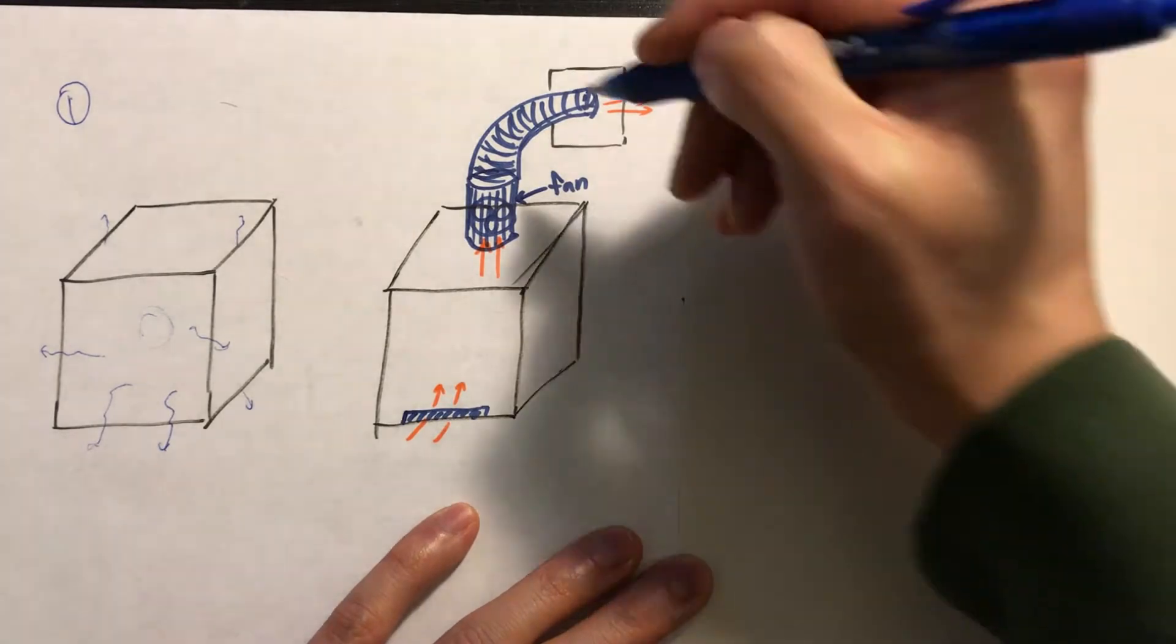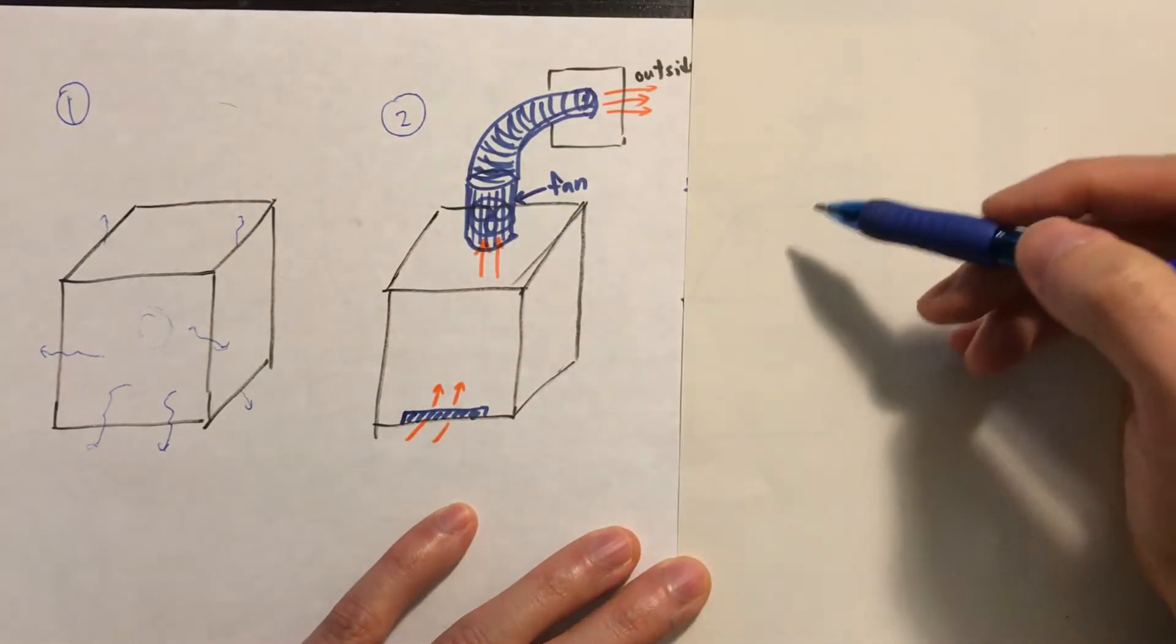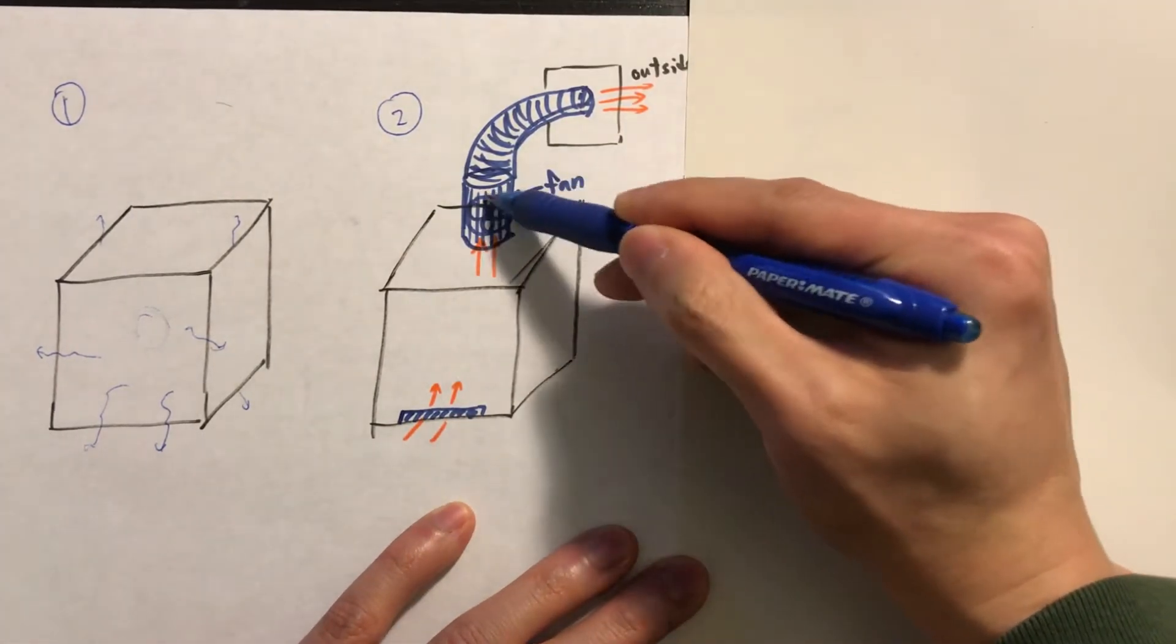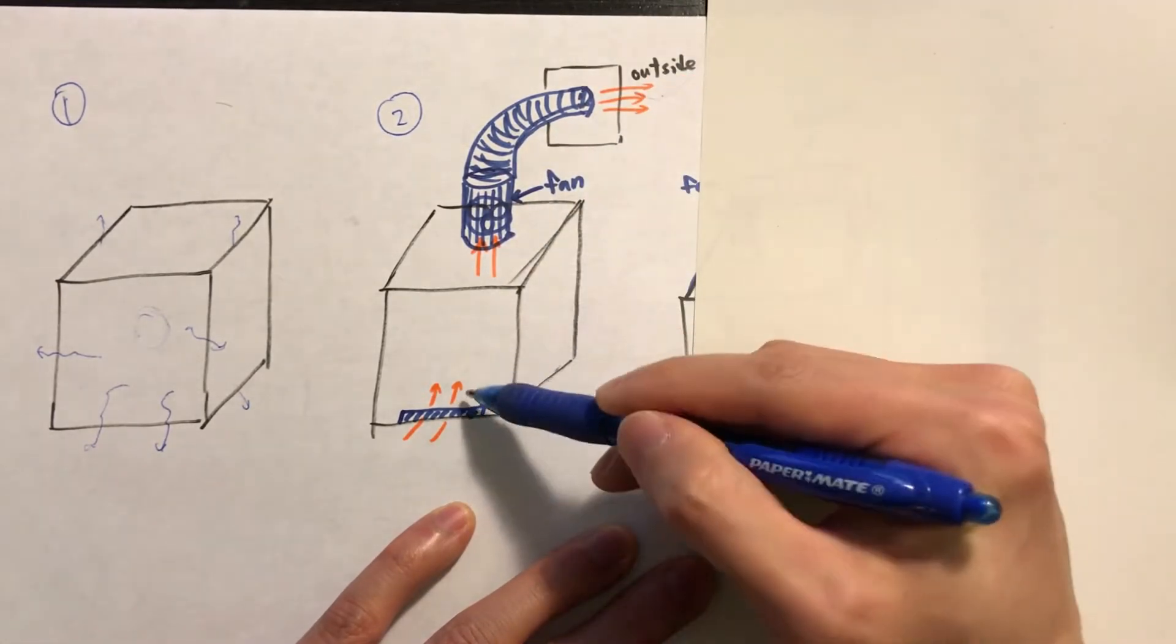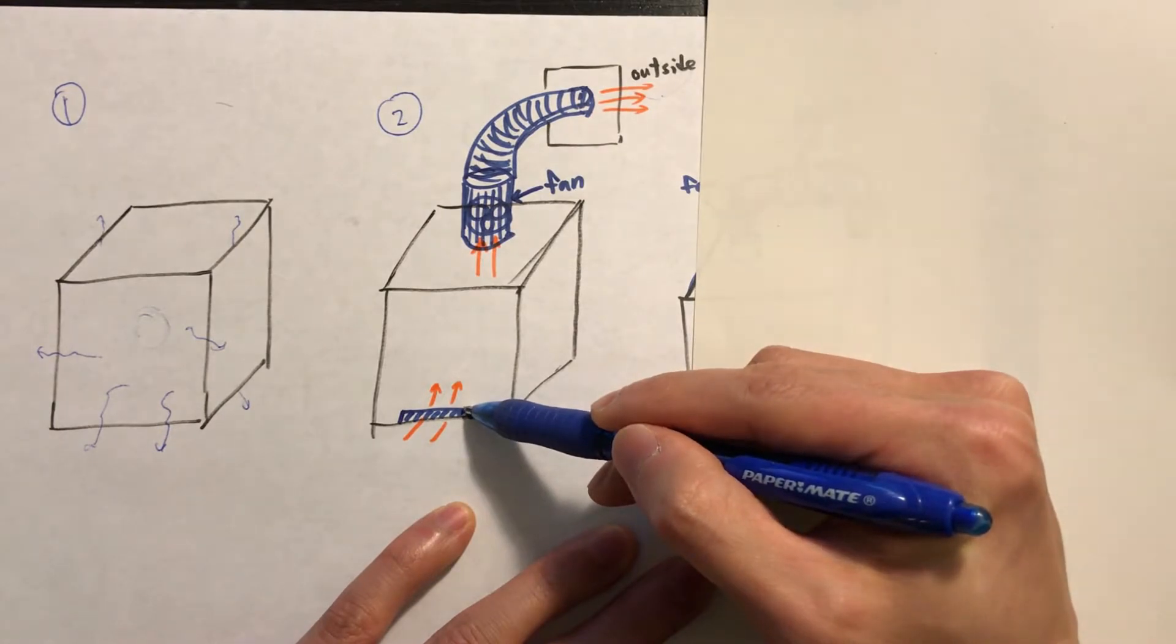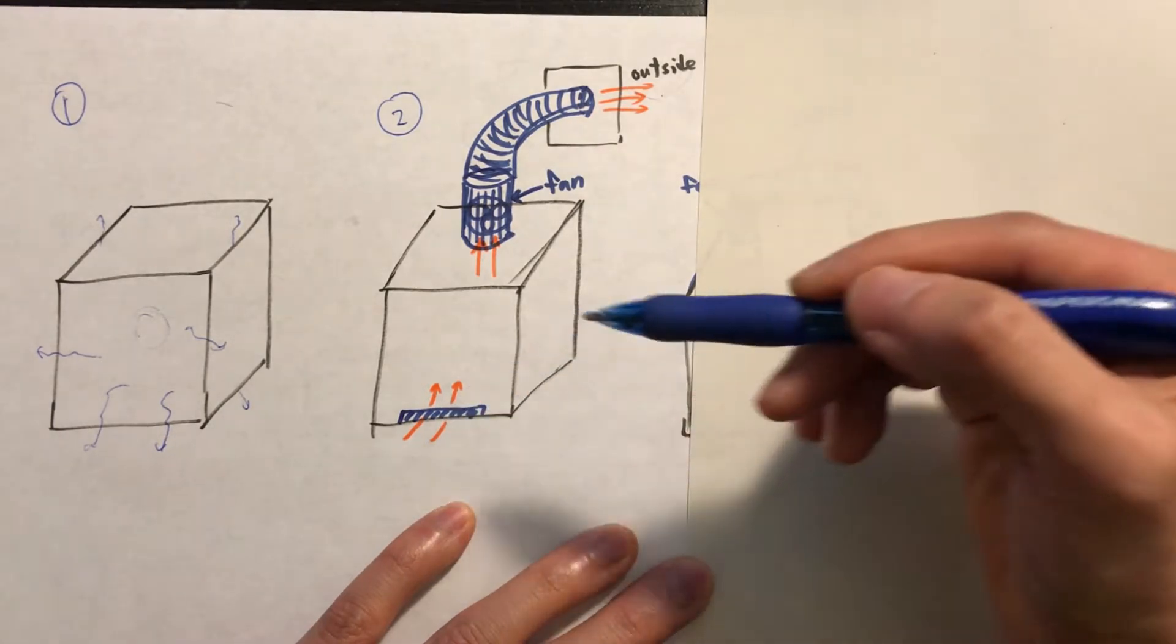The second enclosure design is the one with ventilation. This design has an outlet with a fan that actively ventilates the air out of the enclosure and to the outside of your home. It also has a relatively small inlet to keep the pressure difference.